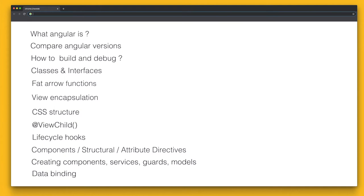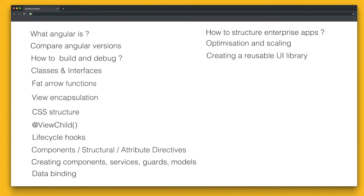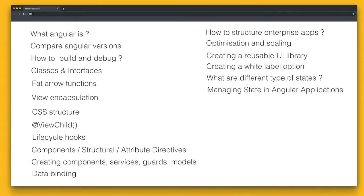And then more into the advanced level, where we'll look at how to structure an app, and when we're structuring an app, how to scale it — how to think about what happens when you want to scale each part of it. That includes reusable components, white labeling, and we'll be looking at different types of state stages that are in Angular.